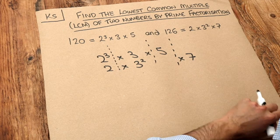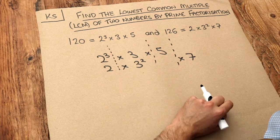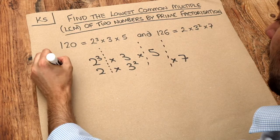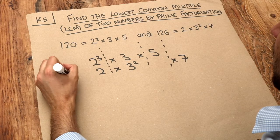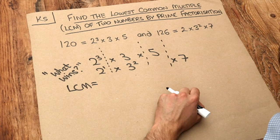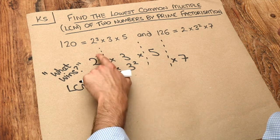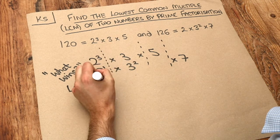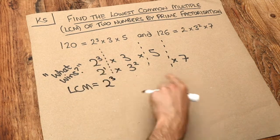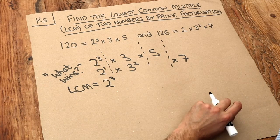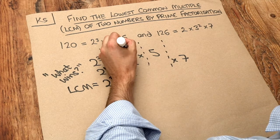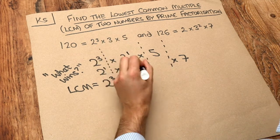At this point to find the LCM of the two numbers I just ask what wins in each case. And what I mean by what wins is whatever has the highest index. So we can see that 3 is bigger than 1, so the 2 to the 3 wins over 2 to the 1. What about 3 squared and 3? What wins? Well 2 is a bigger index than this index of 1 here, so this wins.